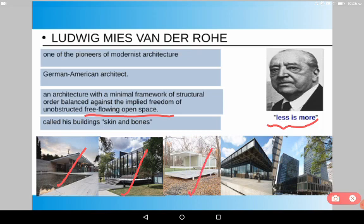His famous works include the Barcelona Pavilion in Spain, Crown Hall in Chicago, Farnsworth House, the New National Gallery in Berlin, and Westmount Square in Canada.